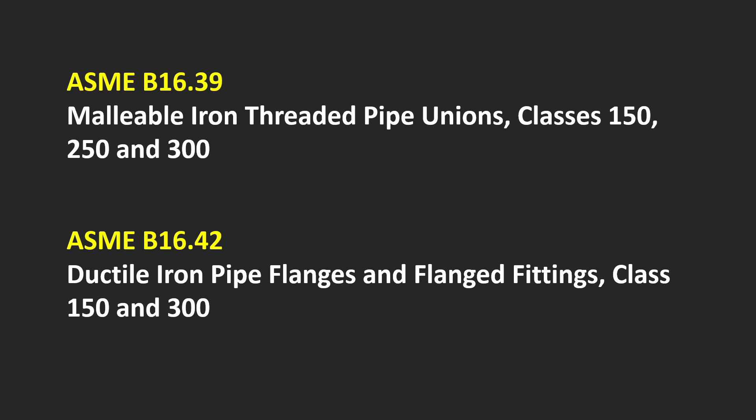ASME B16.42 covers ductile iron pipe flanges and flanged fittings, Class 150 and 300.